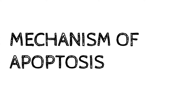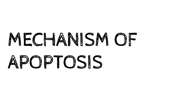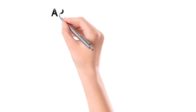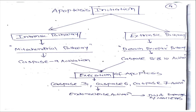Now I will teach you the mechanism of apoptosis — this is Part 2. If you have not seen Part 1 of apoptosis, then first see it for better understanding. For any process to begin in our body, you first need initiation. So the first step of apoptosis is initiation of the apoptosis process, and after initiation, finally execution of apoptosis will happen.